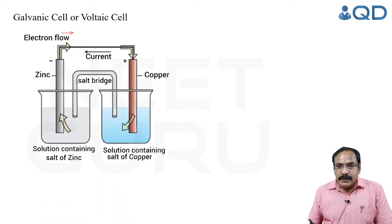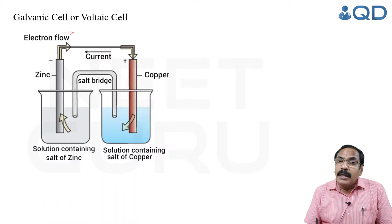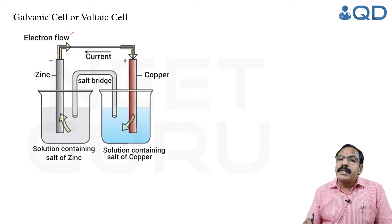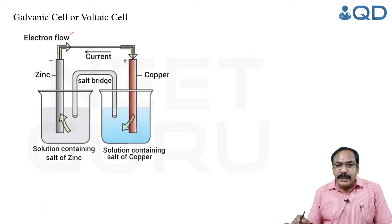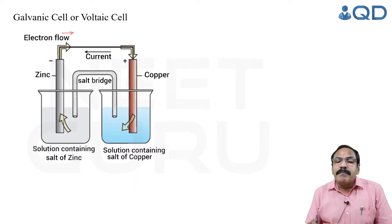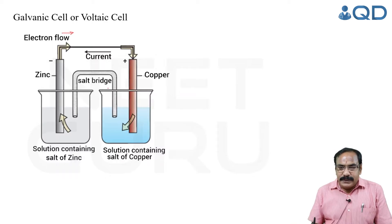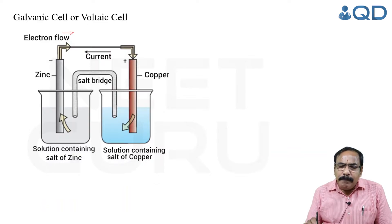A galvanic cell consists of two half cells: the anodic half cell where oxidation takes place, and the cathodic half cell where reduction takes place. The anodic and cathodic half cells never come in direct contact — the contact is made through an arrangement called a salt bridge. It is an inverted U-shaped glass tube filled with a paste of saturated potassium chloride in an agar-agar gel medium.